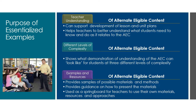Essentialized Examples also provide three different examples or samples of what this could look like at distinct different levels of complexity. We know there could be much more than three options because students with significant cognitive disabilities have varying ability levels. But three distinct ideas of what students should know and be able to do can support teacher application for a variety of student abilities. Essentialized Examples provide suggested materials, guidance on how to support the materials, and they can also be used as a springboard for teachers to think about how to use their own materials, resources, and approaches — things that may be more familiar to a student and tap into background knowledge.